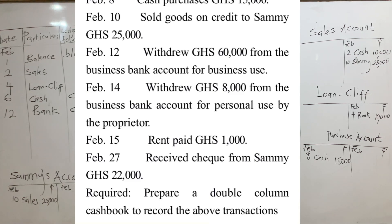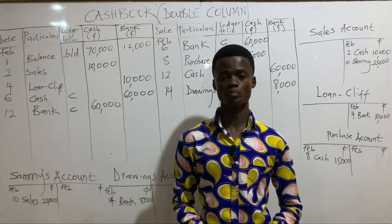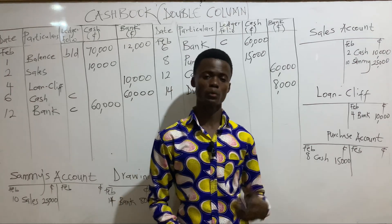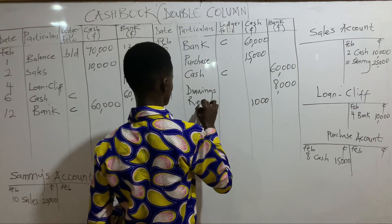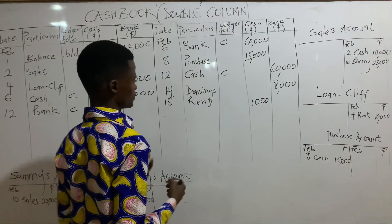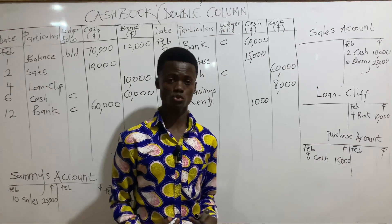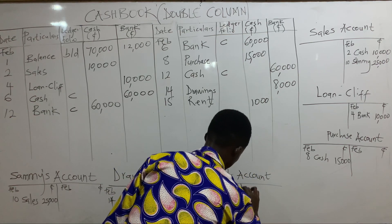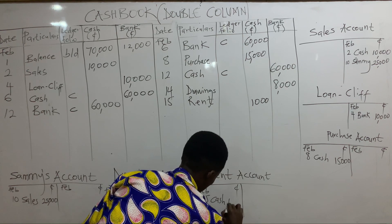On February 15th, rent paid 1,000 cedis. When an expenditure is incurred, the double entry rule says to debit the expenditure account and credit the source of payment. Since cash was used, we credit the cash column of the cashbook with 1,000 cedis in the name of rent, and debit the rent account with 1,000 cedis in the name of cash.